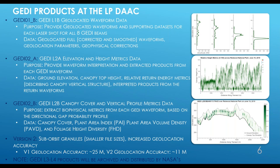The LP DAAC only archives and distributes the Level 1B, Level 2A, and Level 2B footprint level products. The Level 3 gridded canopy height metrics products and Level 4 biomass products will be made available from NASA's Oak Ridge National Laboratory DAAC in the near future.